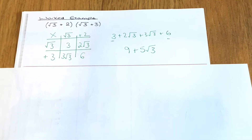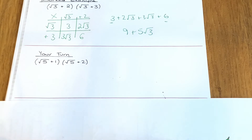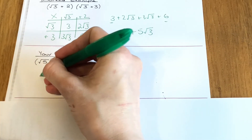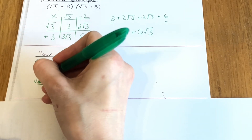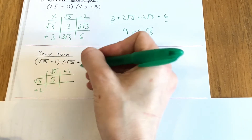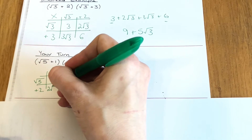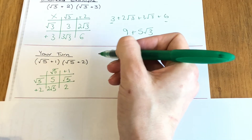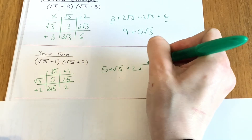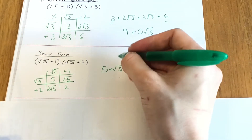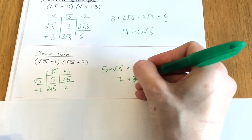Here's one for you to do — press pause and then come back and we'll go through it. Okay, draw your grid. We have (root 5 + 1)(root 5 + 2). Root 5 times root 5 is 5, 1 lot of root 5 is root 5, 2 times root 5 is 2 root 5, and 2 times 1 is 2. Writing them out: 5 + 2 is 7, and 1 lot of root 5 + 2 lots of root 5 is 3 lots of root 5.